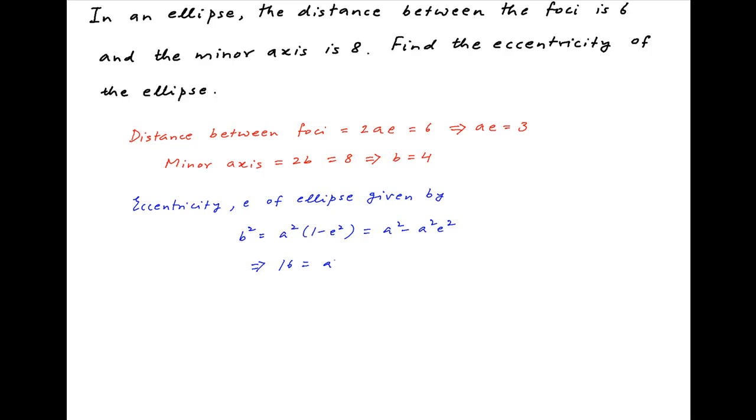Substituting the value of b and Ae obtained above, we get 16 = a² - 9, or a² = 25, which implies that the length of the semi-major axis is equal to 5.